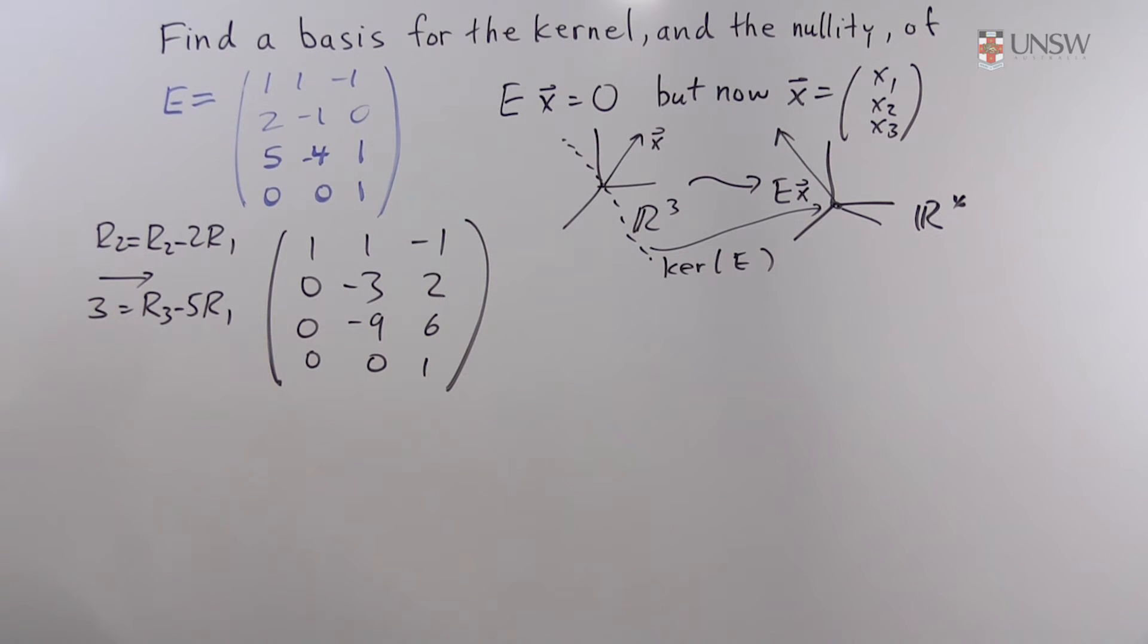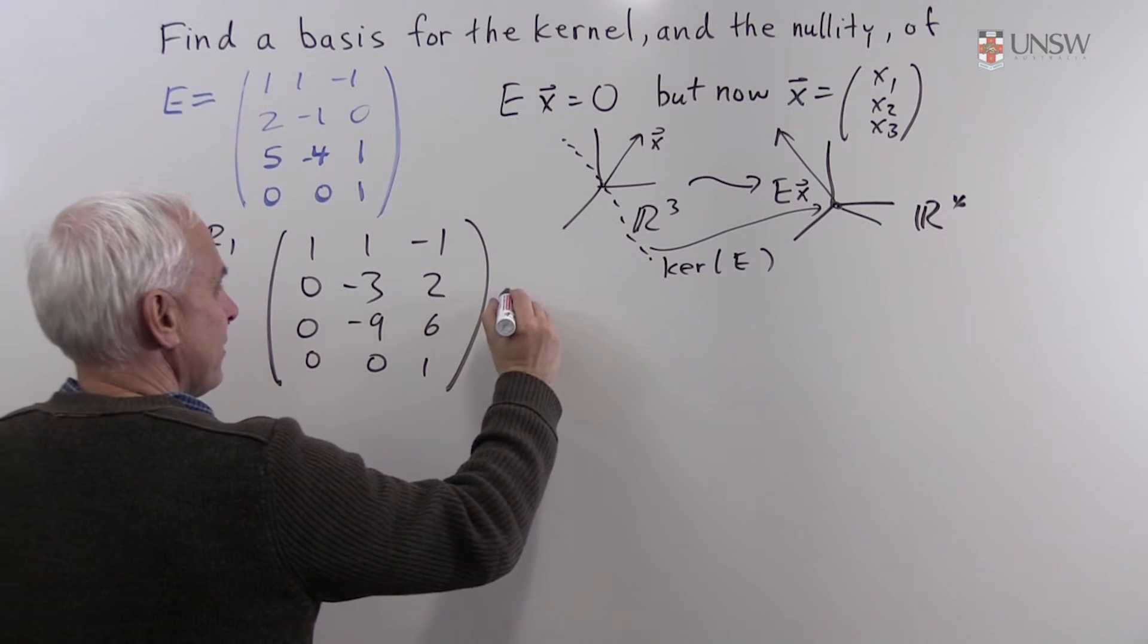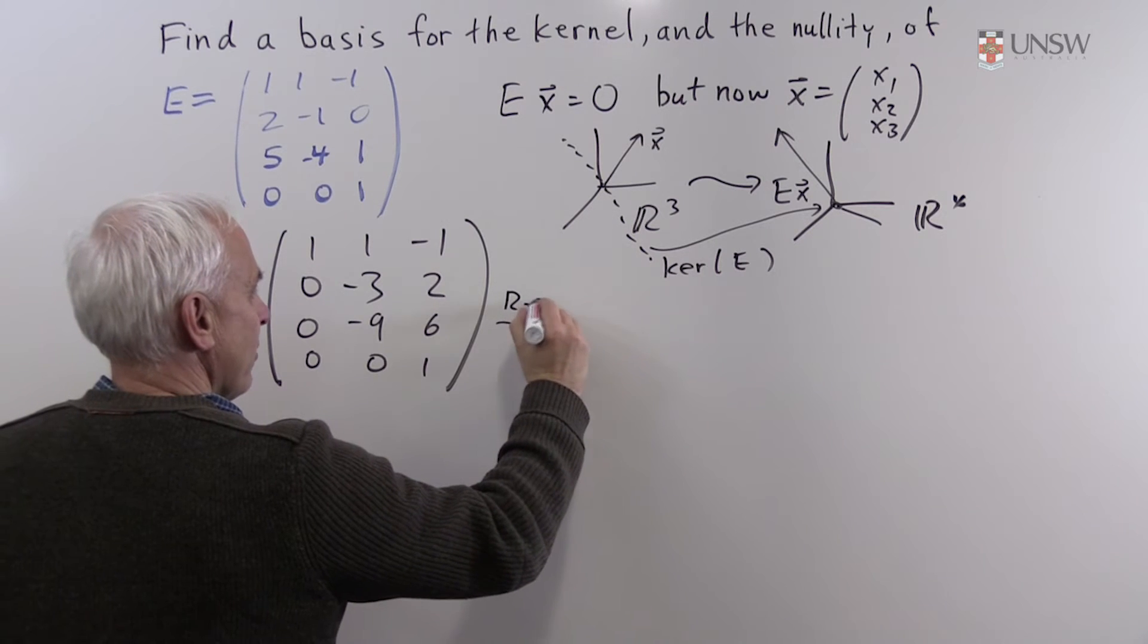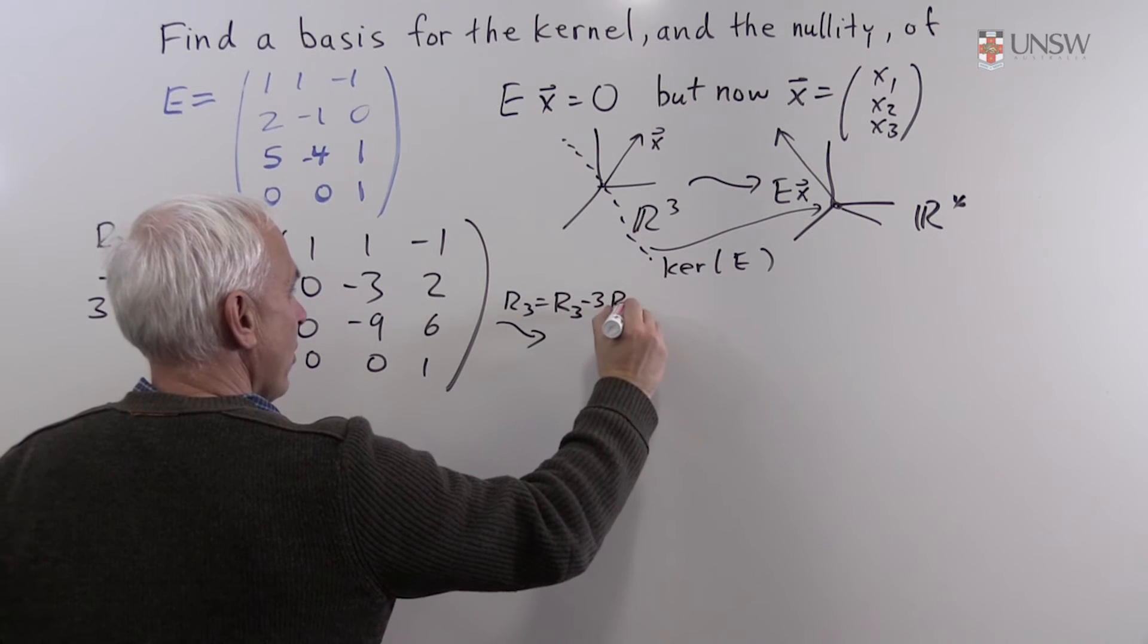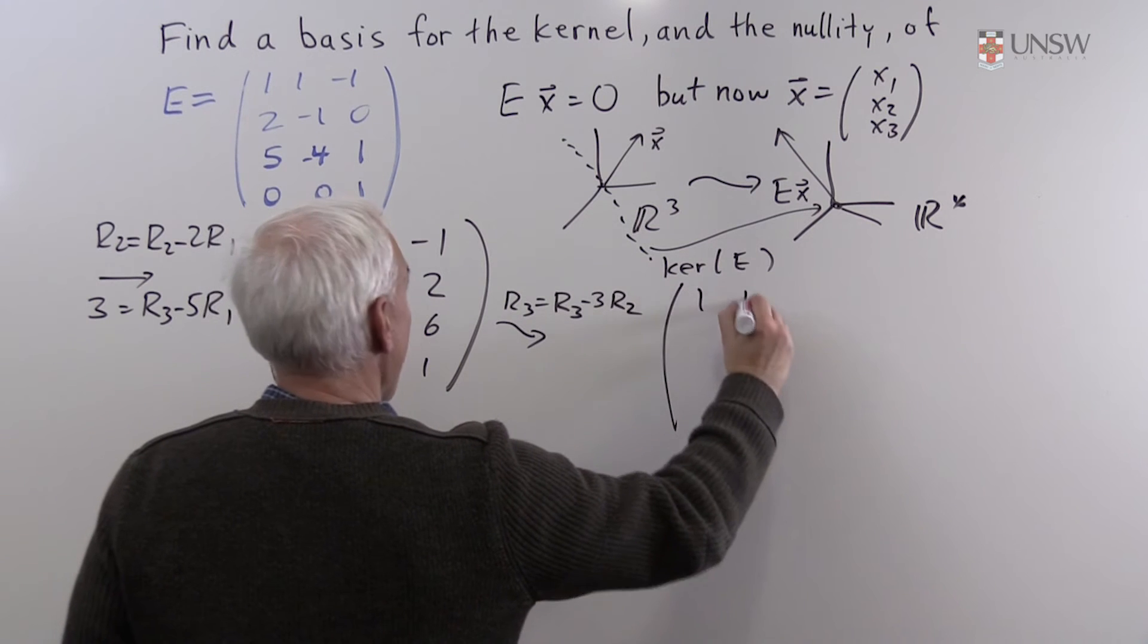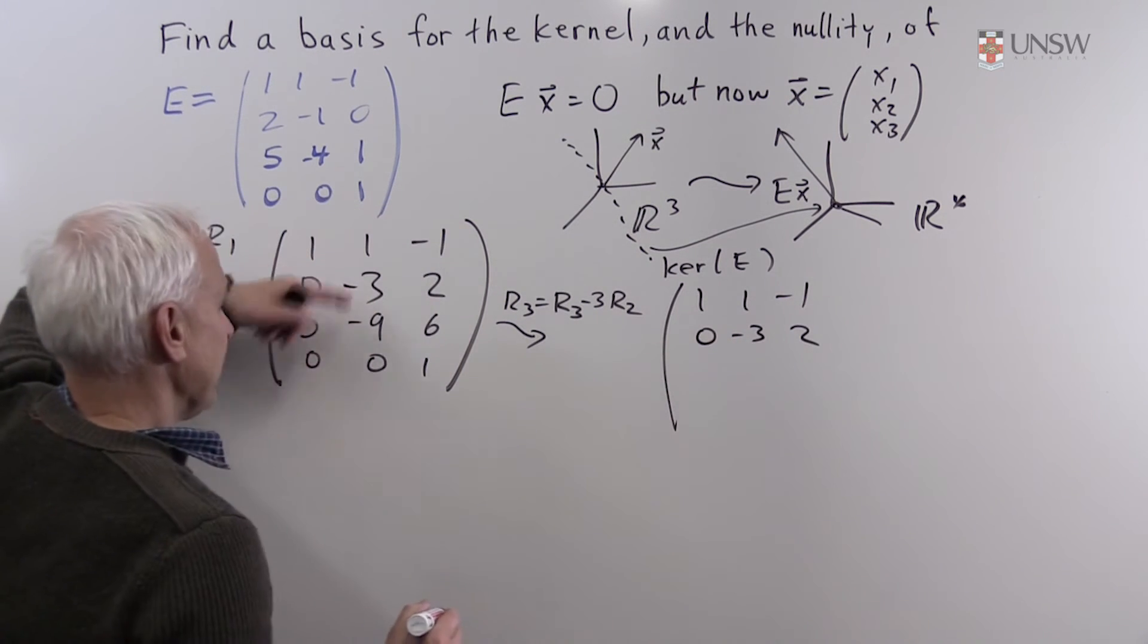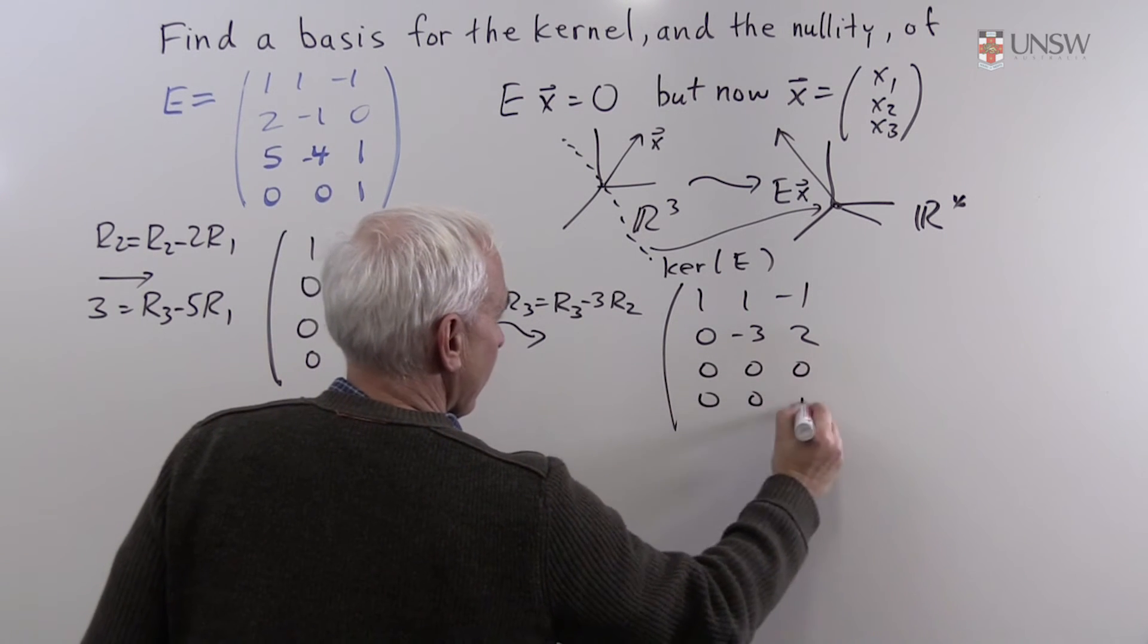And then we can take row 3 equals row 3 minus 3 times row 2. That will give us 1, 1 minus 1, 0 minus 3, 2. So basically, this is a multiple of that one. So we're going to get a row of zeros. And then we're going to get 0, 0, 1.